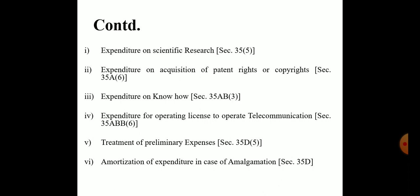Fourth, expenditure for operating license to operate telecommunications under Section 35AB subsection 6: the expenditure on acquisition of a license not yet written off shall be available to the amalgamated company in the remaining number of balance installments. Where such license is sold by the amalgamated company, the treatment of deficiency or surplus will be the same as it would have been in the case of the amalgamating company.